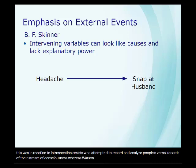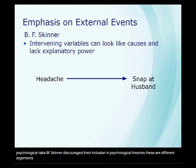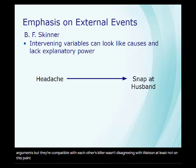Whereas Watson was against the use of unobservable events as psychological data, B. F. Skinner discouraged their inclusion in psychological theories. These are different arguments, but they're compatible with each other. Skinner wasn't disagreeing with Watson, at least not on this point — he was making a separate point.